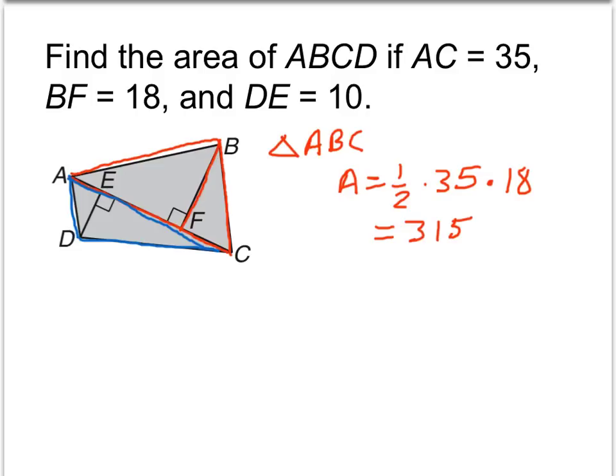Now, alternatively, for the triangle down below, for triangle ADC, even though AC is not on the bottom of that triangle, we can use it as the base because DE is a known length and DE is perpendicular to AC. So if we use AC as the base, then we have 1 half times 35, once again, times DE, which is 10. And so that gives us 175.